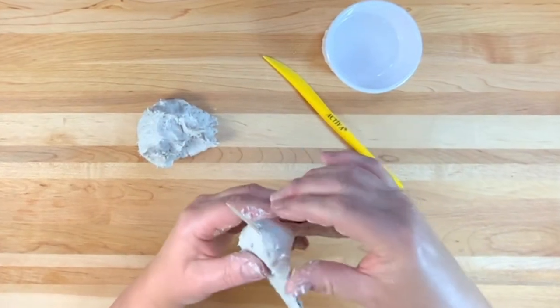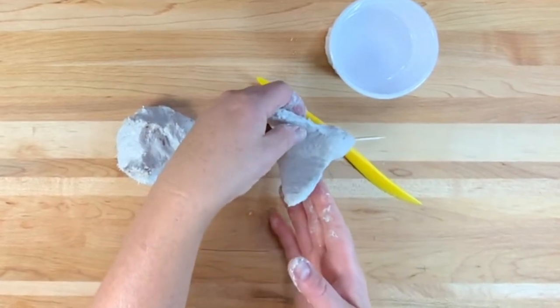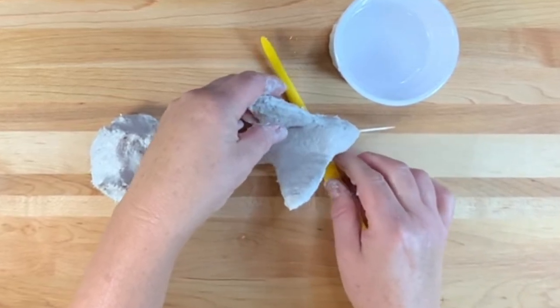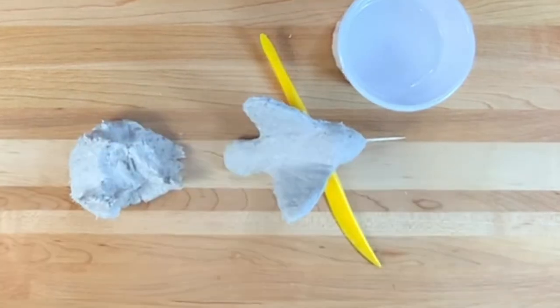Step five, dry. Allow the celluclay sculpture to completely dry. Drying time is dependent upon the weather, heat and humidity, as well as the initial firmness of the mache and the thickness of it. A piece is considered dry when it no longer feels cold to the touch.